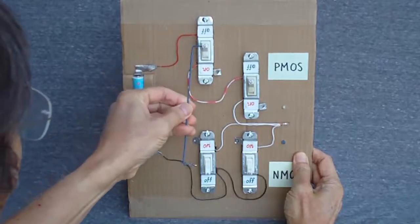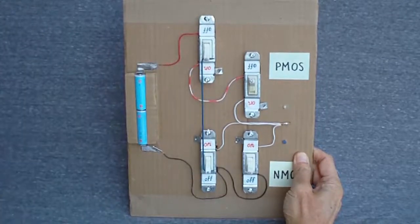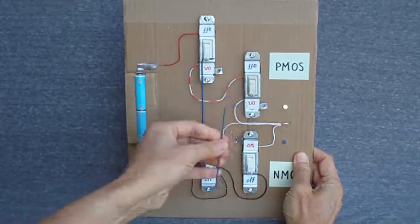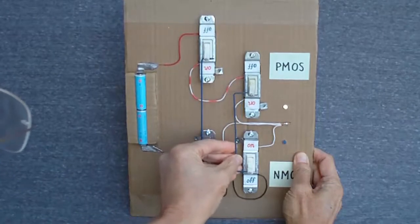let's connect the two pairs of gates as follows. One PMOS gate to one NMOS gate, and the other PMOS gate to the other NMOS gate.